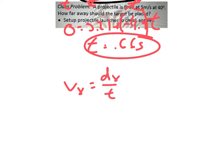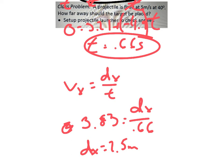And then we can plug that back into our vx equals dx over t. We already had this done. I'm going to rewrite it. We had, and we're looking for dx. So vx was 3.83, dx was what we were looking for, and then t was 0.66. So if we take 0.66 times 3.83, that will be our answer. And we get 2.5 meters away. So if we set up the projectile launcher, set our target, measure out 2.5 meters from the launcher, level with it, we would hit the target.